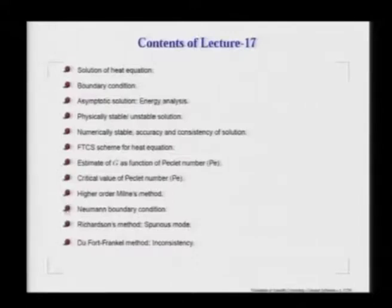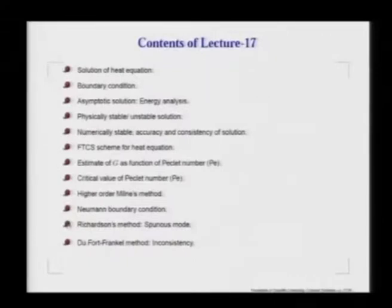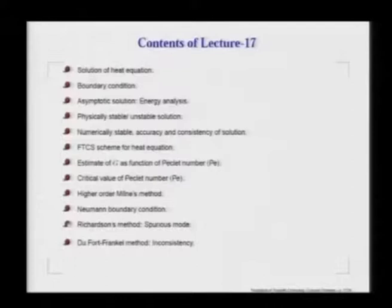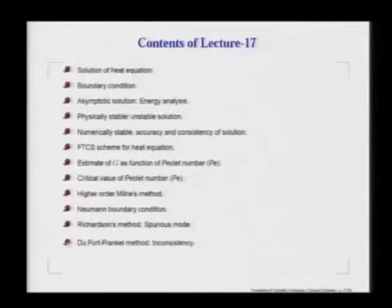Since accuracy is one of our requirements, we will also follow an attempt — a failed attempt by Richardson — which was developed to achieve higher accuracy, but people found that it gives rise to spurious modes. Because it is a three-time-level method, this spurious mode actually makes the method unstable, and we would not suggest that anyone use the Richardson method. This will be followed by another higher-order approach suggested by Dufort and Frankel, where if we are not careful in choosing delta x and delta t, we may end up with an inconsistency problem.